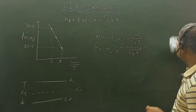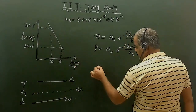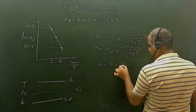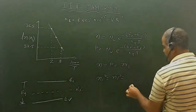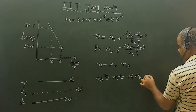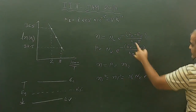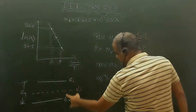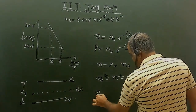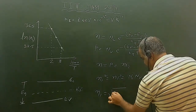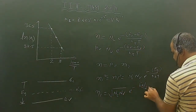Now we calculate the intrinsic concentration ni. For an intrinsic semiconductor, the concentration of electrons equals the concentration of holes, both equal to ni. So ni² = n·p = Nc·Nv · exp(-(Ec - Ef + Ef - Ev) / kT) = Nc·Nv · exp(-Eg / kT), where Eg = Ec - Ev is the band gap. Taking the square root gives ni = √(Nc·Nv) · exp(-Eg / 2kT).